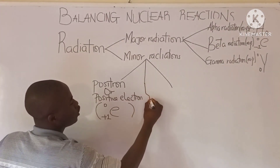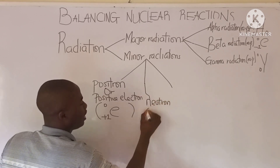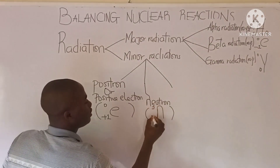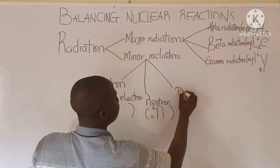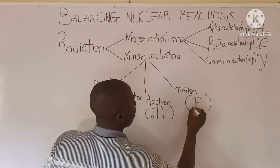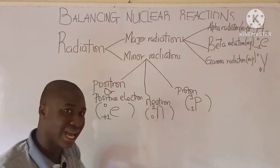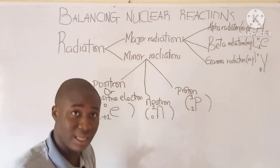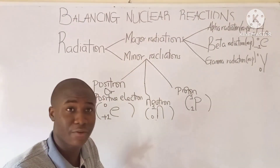The second minor radiation is neutron, given with a symbol of N-1-0. Moving to the last minor radiation called proton, its symbol is P-1-1. All of these are the radiations — major and minor — with their respective symbols, which must be noted. When we start balancing a nuclear reaction, it's very easy.